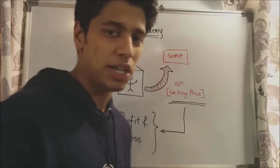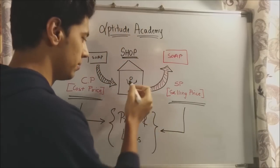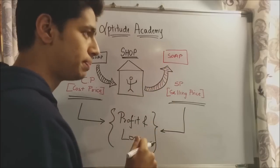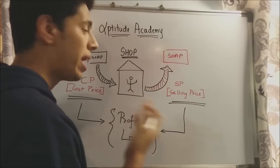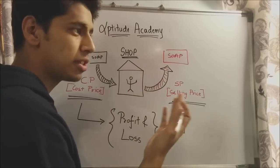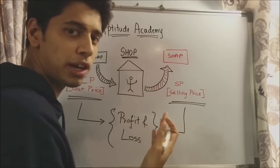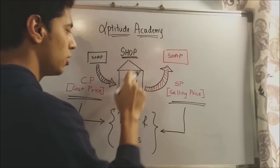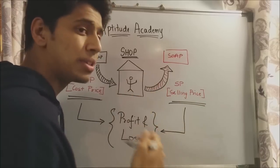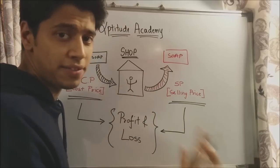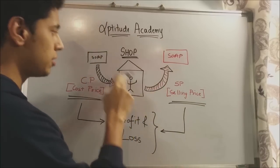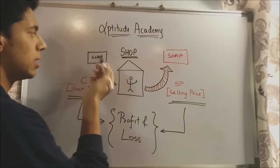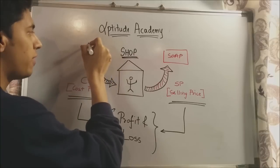To understand Profit and Loss, consider a scenario where you are a shopkeeper and you sell soap. To sell something, you need to have something first. So what you do is go to a wholesale dealer and buy a bar of soap — say you buy it for 5 rupees.